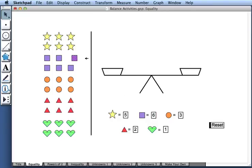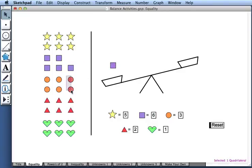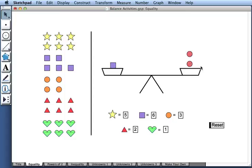Now if I drag a square onto one side, I can balance it with two circles, each with a value of 3.